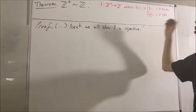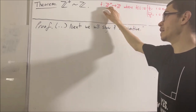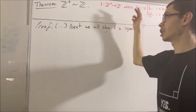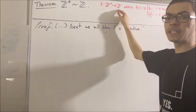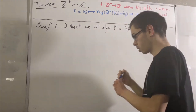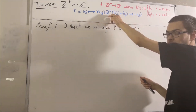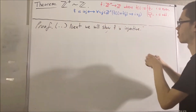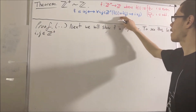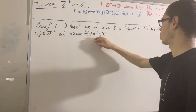What does it mean for a function to be injective? To say that f is injective means that for every two elements i and j in this set, if their output values are equal, then their input values are equal. In other words, for every two elements i and j of the positive integers, if f of i is equal to f of j, then i is equal to j. To prove that f is injective, give me any two positive integers — I'll call them i and j. Our goal is to show that if f of i equals f of j, then i is equal to j. So let's assume that f of i is equal to f of j, and now we want to show that i is equal to j.